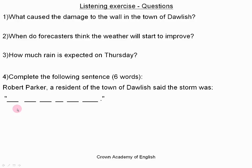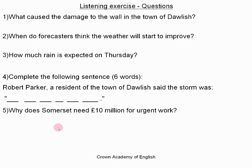Question five, the last question: why does Somerset need ten million pounds for urgent work? Those are the five questions that I would like you to answer during the listening exercise. So get ready — you are now going to listen to the news article. I'm now going to play you the article.